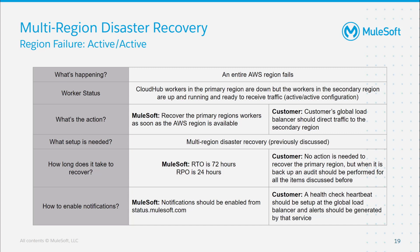In an active-active scenario, the entire AWS region has gone down, but because we are in an active-active configuration, the workers in the secondary region are up and running and ready to receive traffic. The customer's global load balancer should detect that the primary region is down and automatically send traffic to the secondary region. Meanwhile, MuleSoft has 72 hours to bring up the primary region and guarantees that the data brought back up will be at most 24 hours old from the time of the failure. Notifications of such failure should come from status.mulesoft.com, and it is also highly recommended that customers set up a health check with the global load balancer to alert needed teams whenever the region goes down.